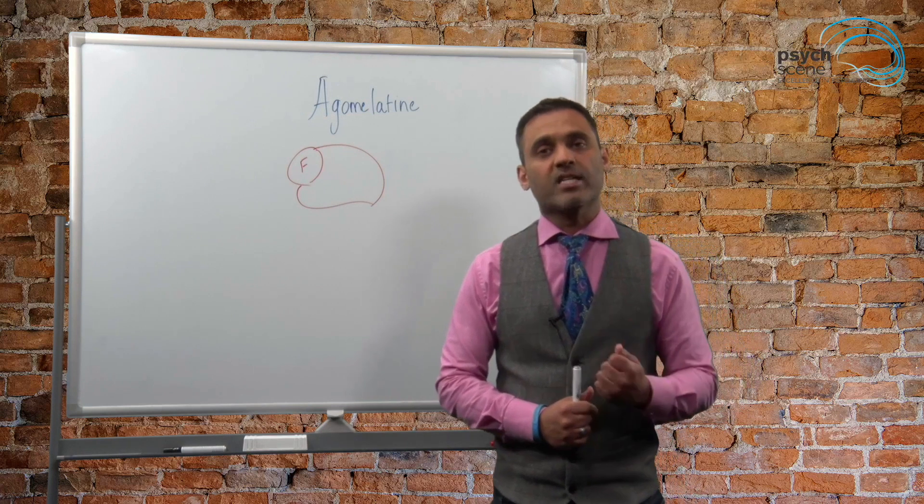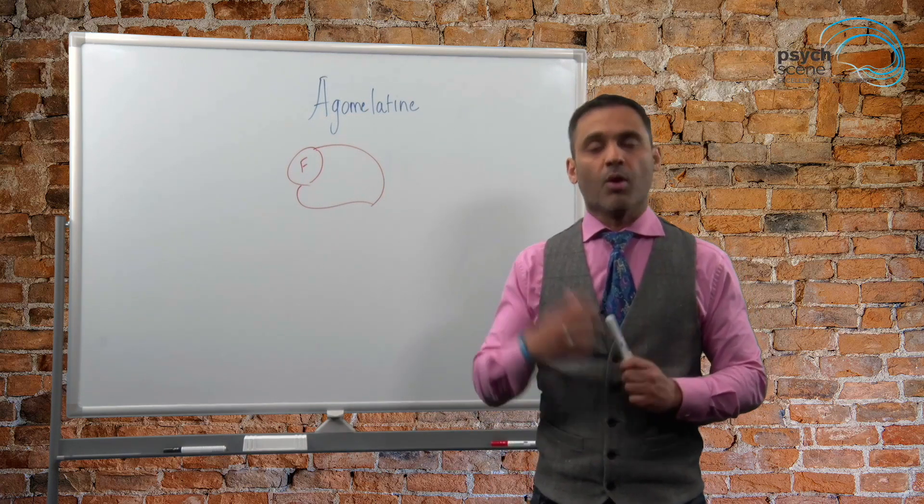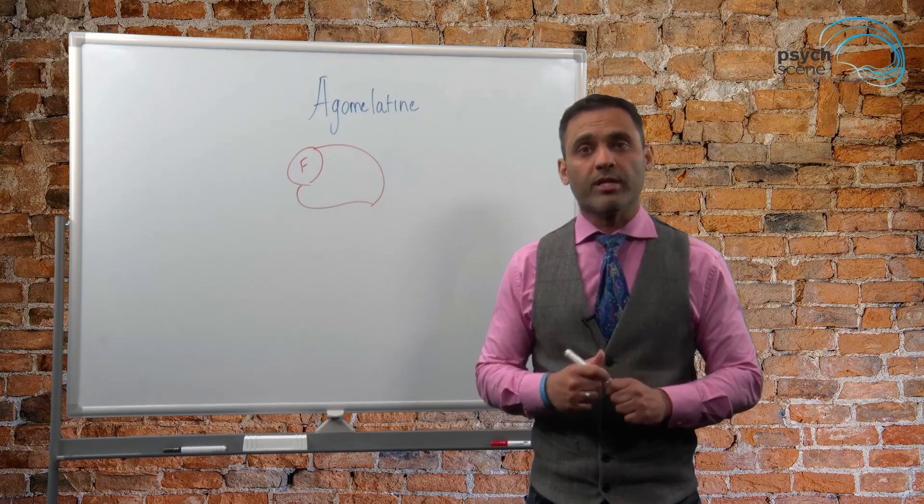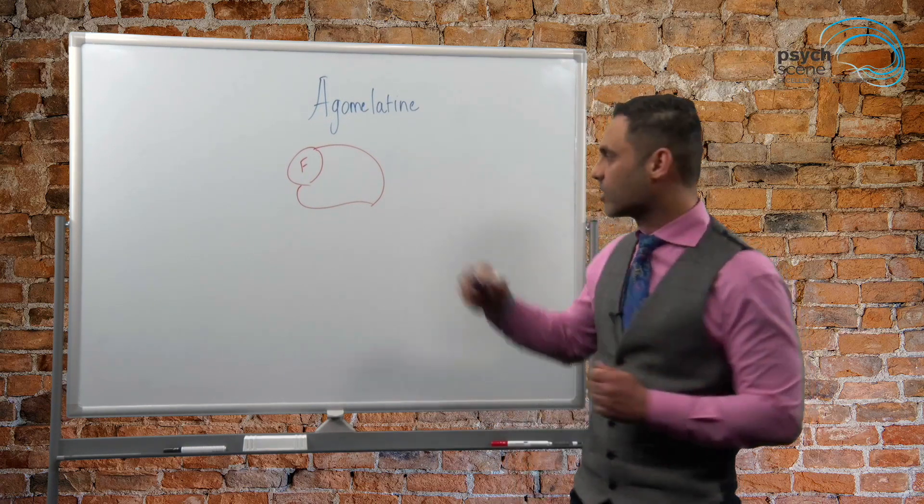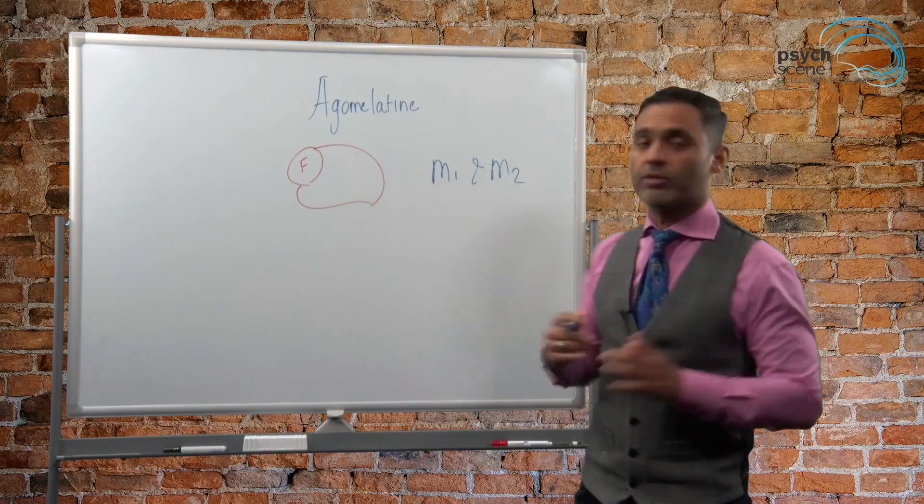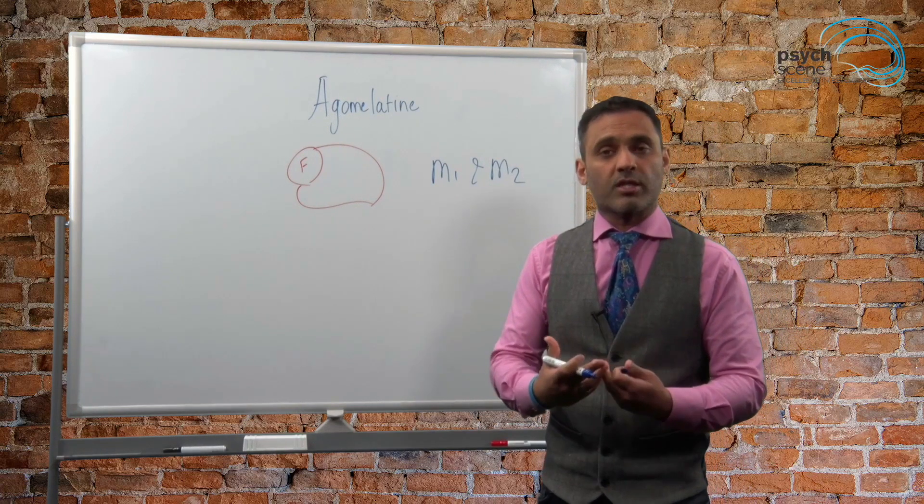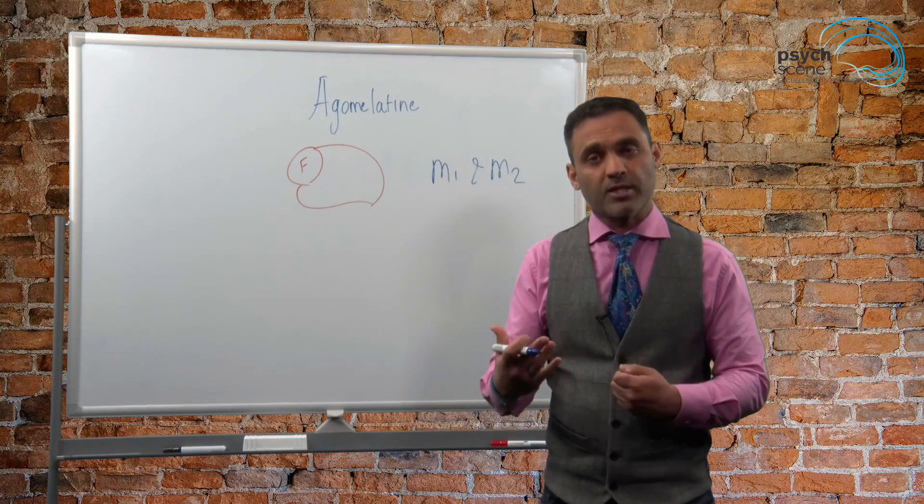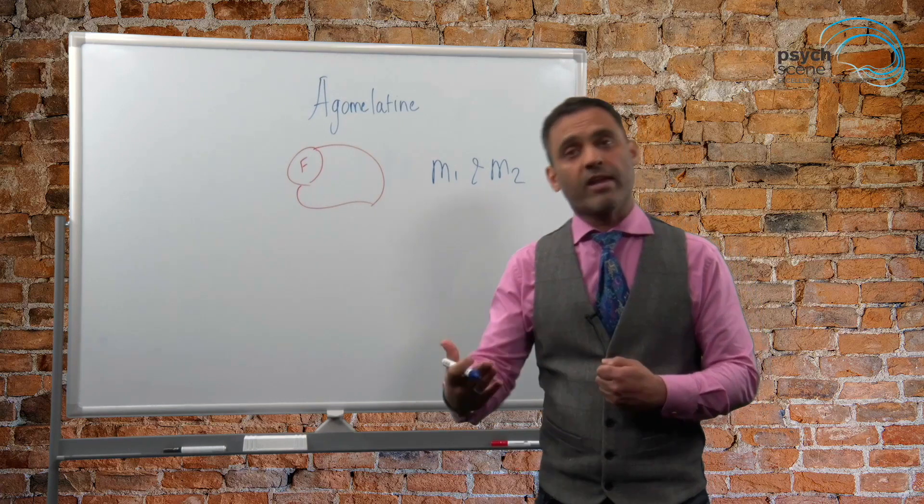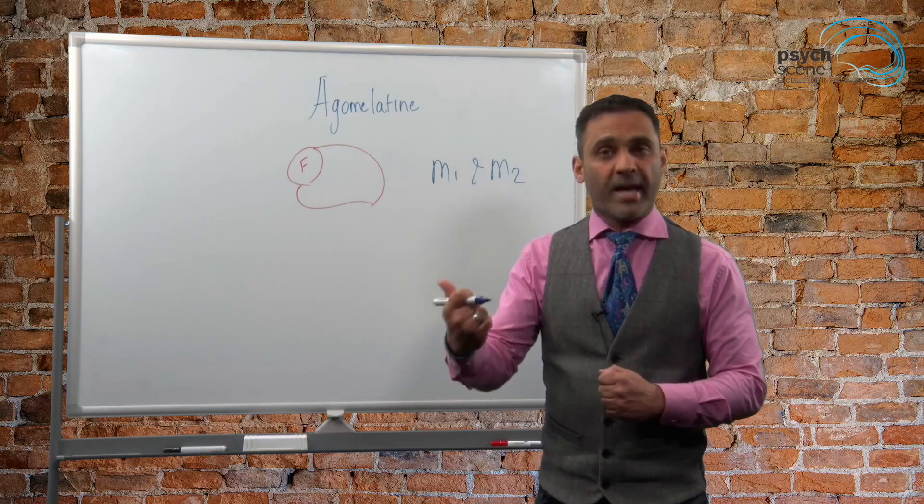So in terms of the mechanism of action, Agomelotine has two main mechanisms. One, it is a melatonin agonist. So what it does is it actually acts on M1 and M2, which are melatonin receptors. It actually activates these. Now we know that activating melatonin receptors will help in circadian rhythm regulation and promoting sleep. So that's one benefit.